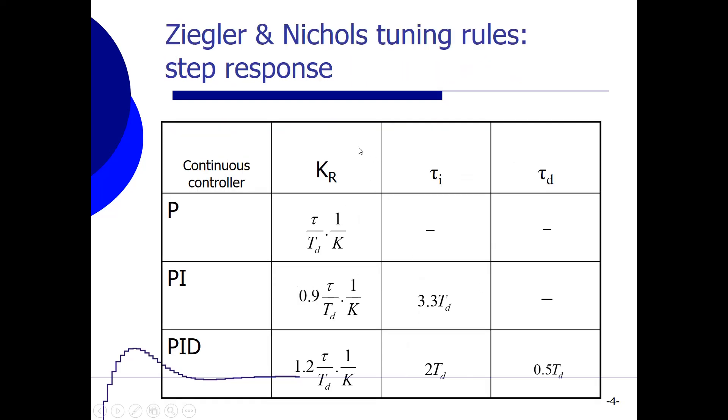And remember, when we had a continuous controller, then we could use these rules for getting the K_R, the tau_i and the tau_d, so our controller parameters. When we had only a P-controller, we could say K_R is equal to 1 over the process gain times tau divided by tau_d. When we have a PI controller, we have the same setting for K_R multiplied with 0.9, and tau_i can be set to 3.3 times delay time.